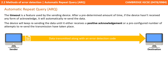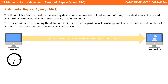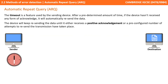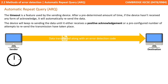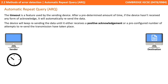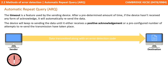The timeout is a feature used by the sending device. If, after a predetermined amount of time, it hasn't received any form of acknowledgement, it will automatically resend the data. It will keep doing this until either it receives a positive acknowledgement or until a predetermined number of attempts to resend the transmission has taken place.